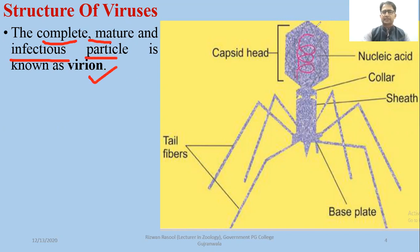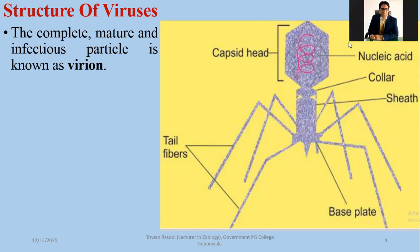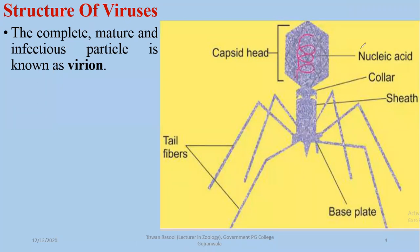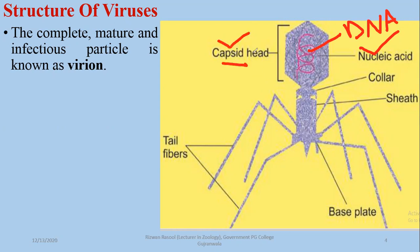In any virus, if you look at its composition, there are two basic components in the viral composition. One of them is nucleic acid, which may be DNA or RNA. In this case, this is DNA. And in addition to this, there is a protein coat or capsid which is made up of proteins.